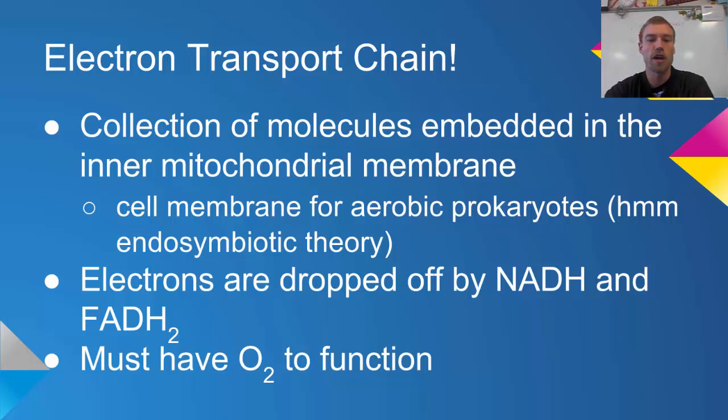The cell membrane for aerobic prokaryotes is very similar to this inner membrane, which is another piece of evidence that helps to support the endosymbiotic theory. Electrons are going to be dropped off by the NADH and the FADH2, and they require oxygen in order to function properly.